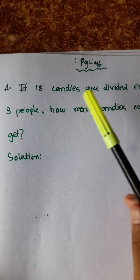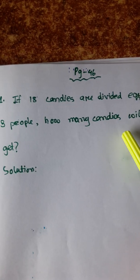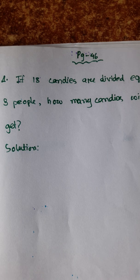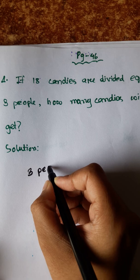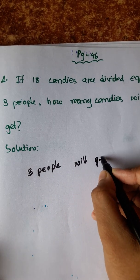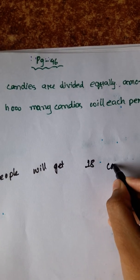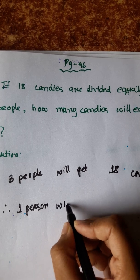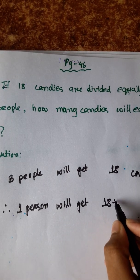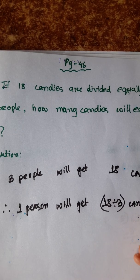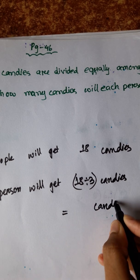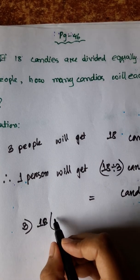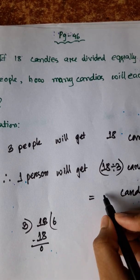Now, if 18 candies are divided equally among 3 people, how many candies will each person get? So we can write: 3 people will get 18 candies. So therefore, 1 person will get 18 divided by 3 candies. We know 6 threes are 18, so 6 candies.